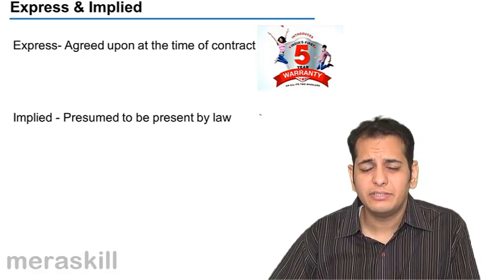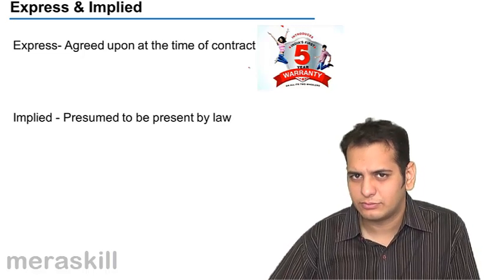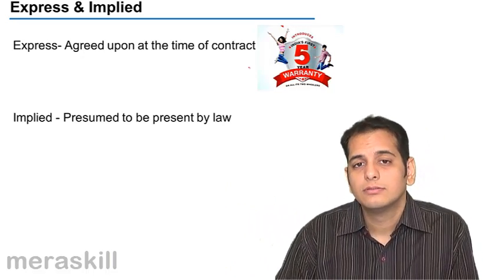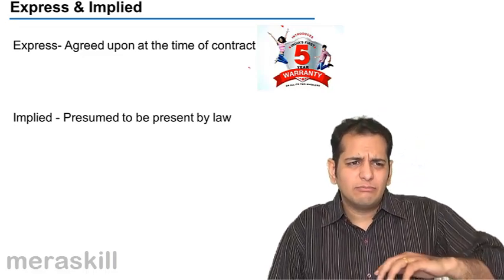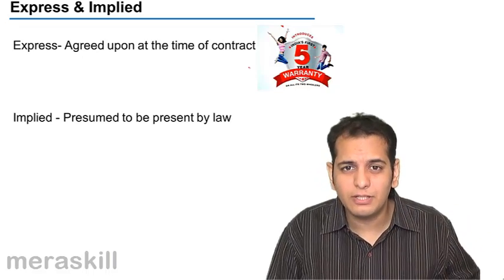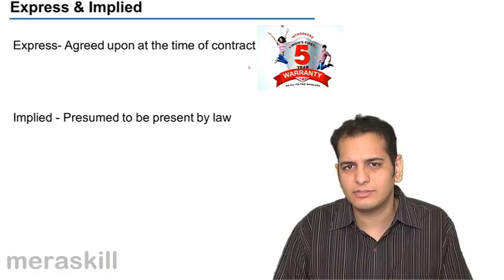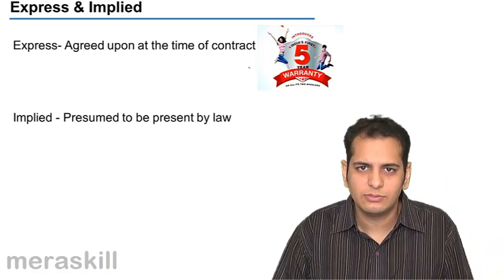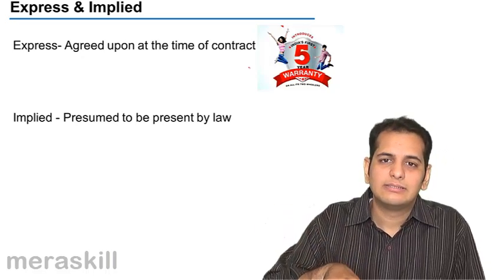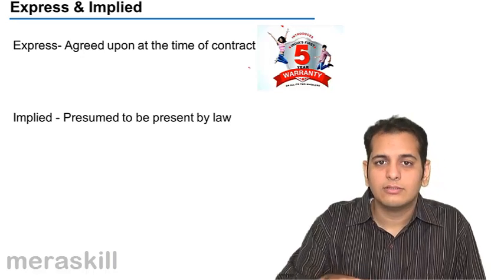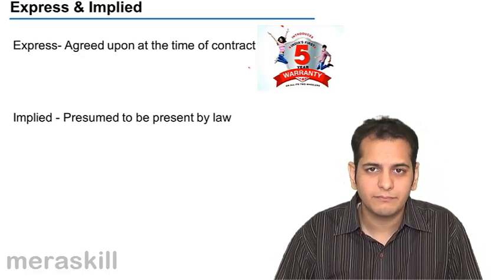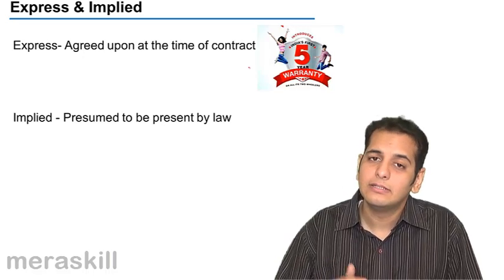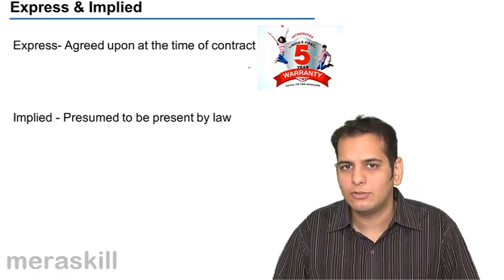You would have seen that you get guarantees and warranties when you purchase goods — that is express. But there may be some things which the law implies on you — they are implied. When it comes to express terms, any number of conditions and warranties may be expressed between the buyer and the seller. However, if they are silent about certain things, the law itself says that even if the buyer and seller have not touched upon these clauses, they'll still have to be followed.